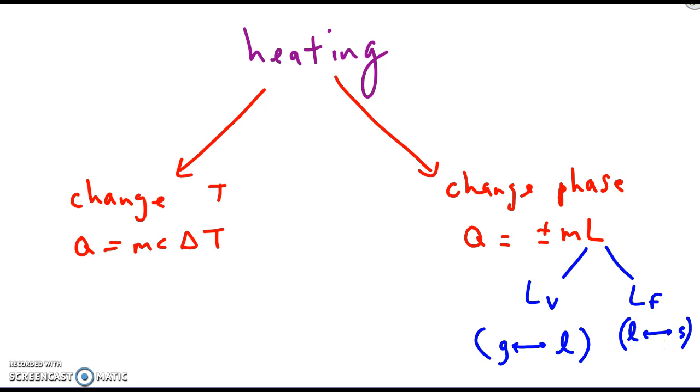So if you're freezing the object, that's liquid to solid, you would use the value for fusion. If the phase change is condensing, condensing is going from gas to liquid, so you would use the latent heat of vaporization.